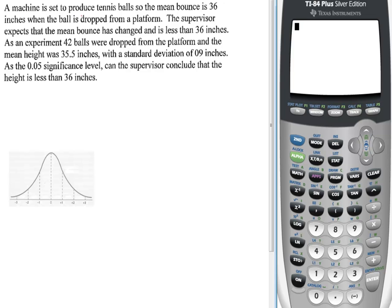A machine is set to produce tennis balls so that the mean bounce is 36 inches when the ball is dropped from a platform. The supervisor expects that the mean bounce has changed and is less than 36 inches. As an experiment, 42 balls were dropped from the platform and the mean height was 35.5 inches with a standard deviation of 0.9 inches.